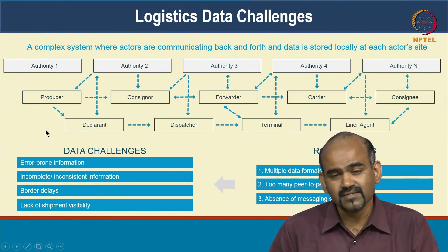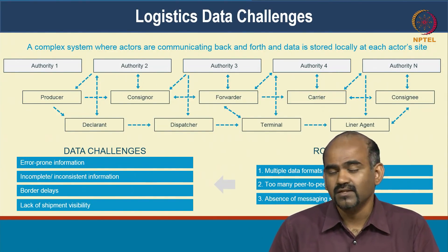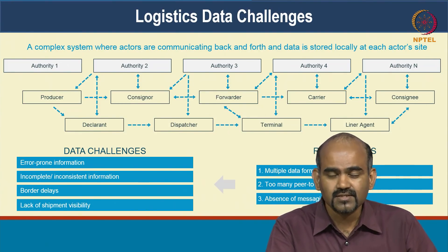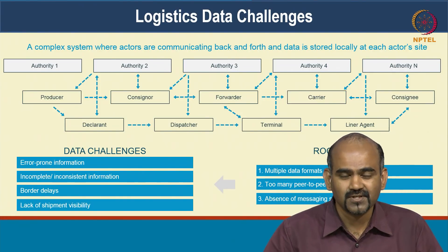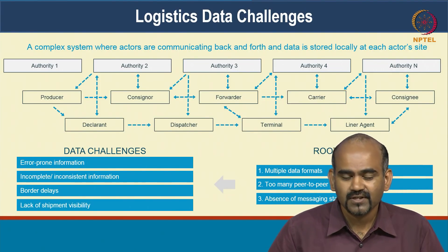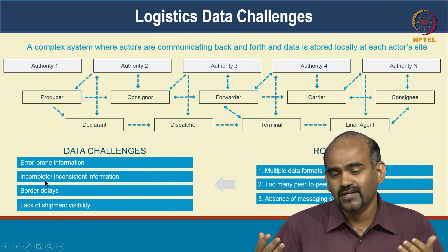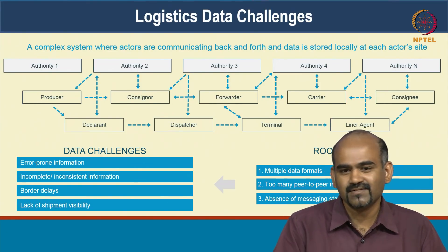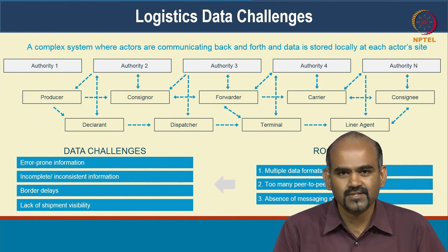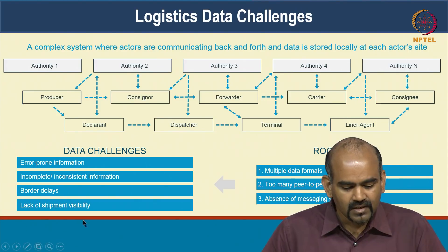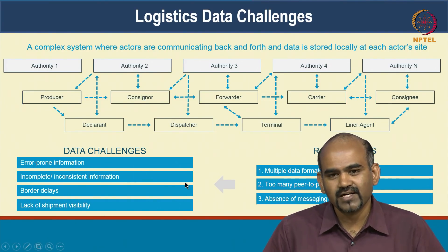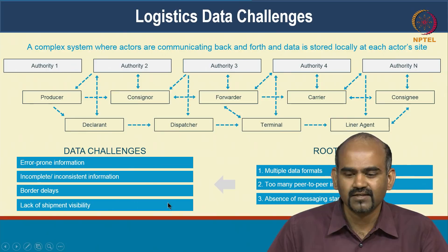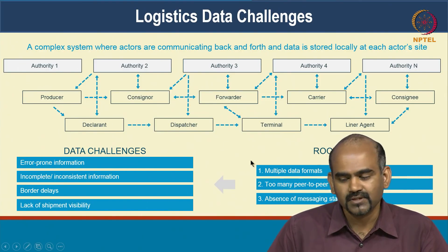Because of that there can be inconsistencies in information. For instance, one document could say the value of goods being shipped is 100,000 dollars, whereas another document says 110,000 dollars. Which one do you believe? You stop what you are doing, try to figure out why this discrepancy is there, and that causes further delays. And of course, lack of visibility means the exporter has to call and find out why a shipment has not reached the other end — those sorts of issues happen all the time.